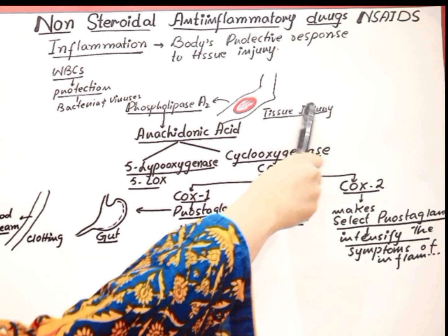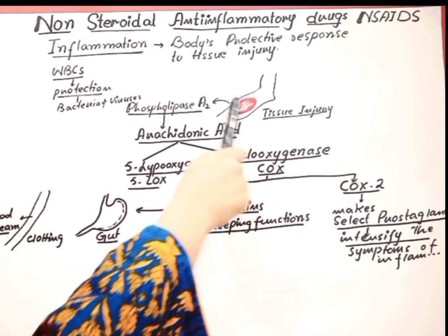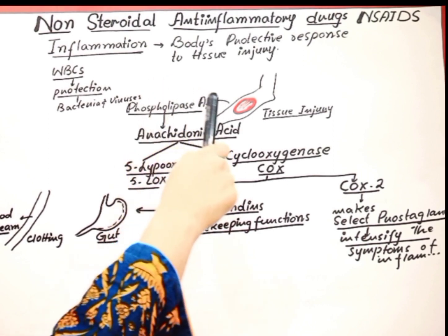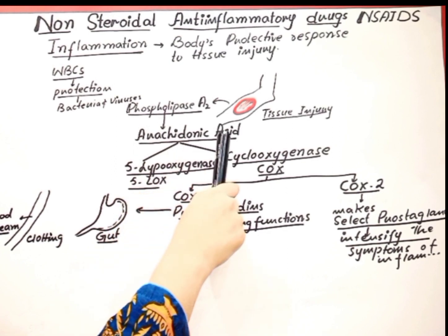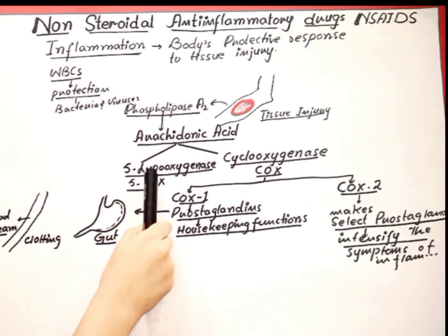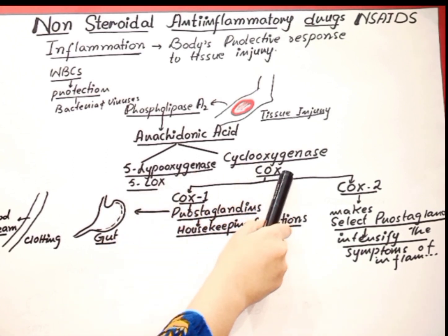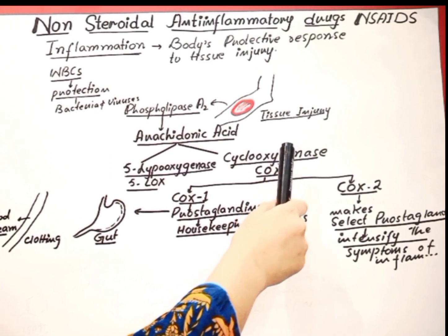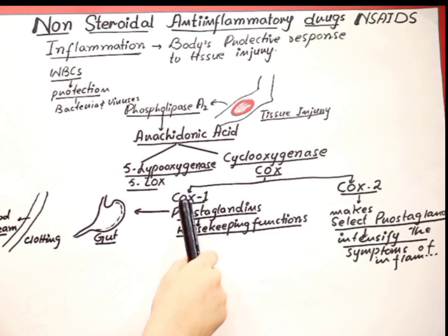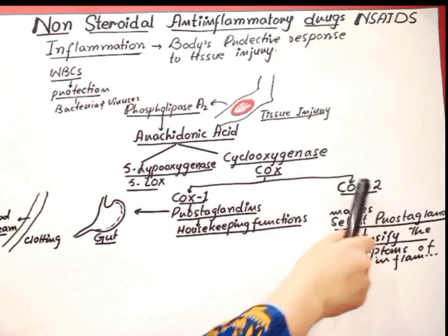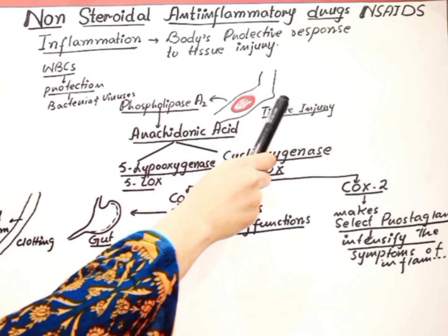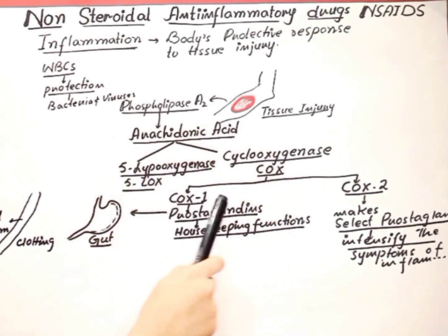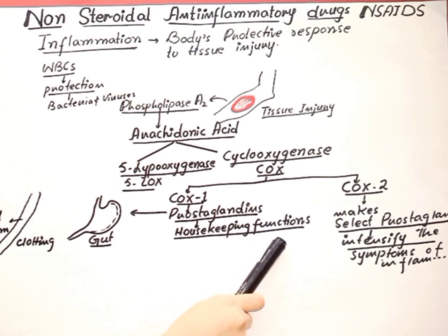Whenever we get some tissue injury, that particular injured tissue releases the phospholipase A2 enzyme, which converts into arachidonic acid. This arachidonic acid is a substrate for two major enzymes — 5-LOX and COX enzymes. The COX enzyme is available in different forms, but here we focus on COX-1 and COX-2. When we get injured, all these mechanisms occur, prostaglandins are released, and we feel pain, so we need some painkillers.